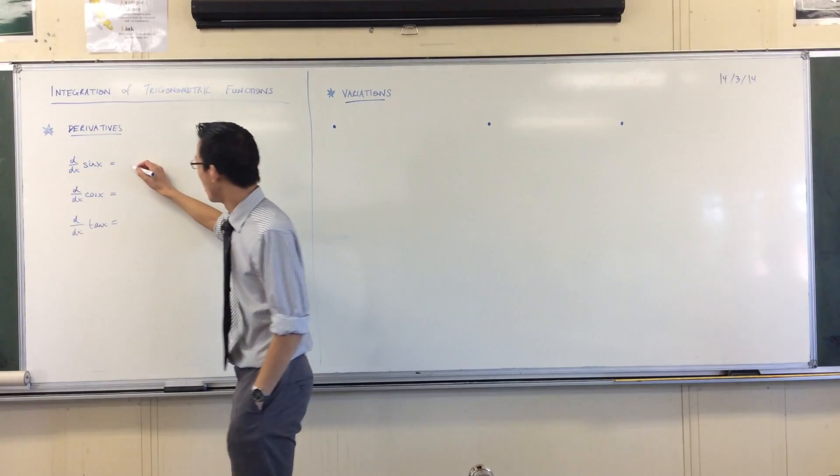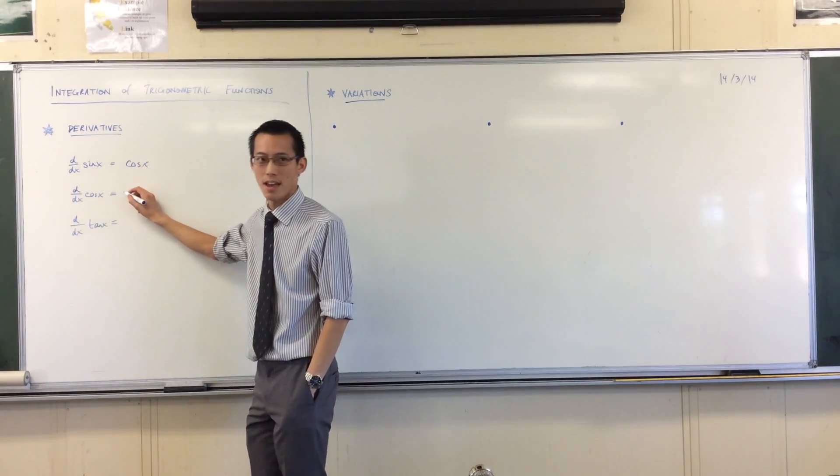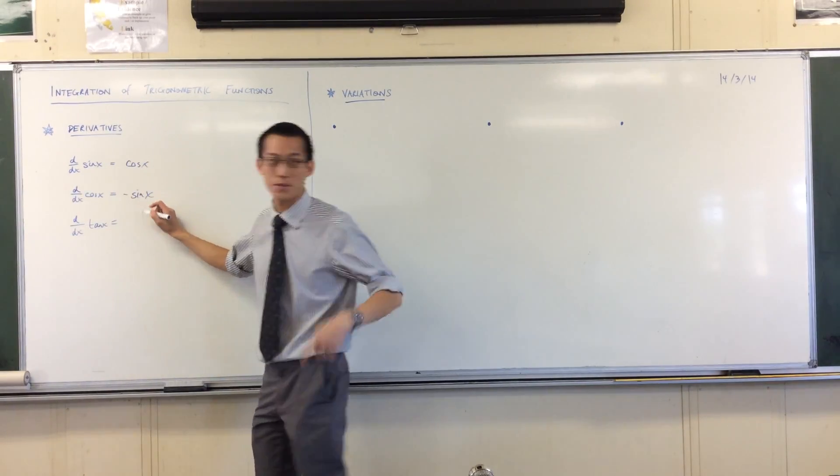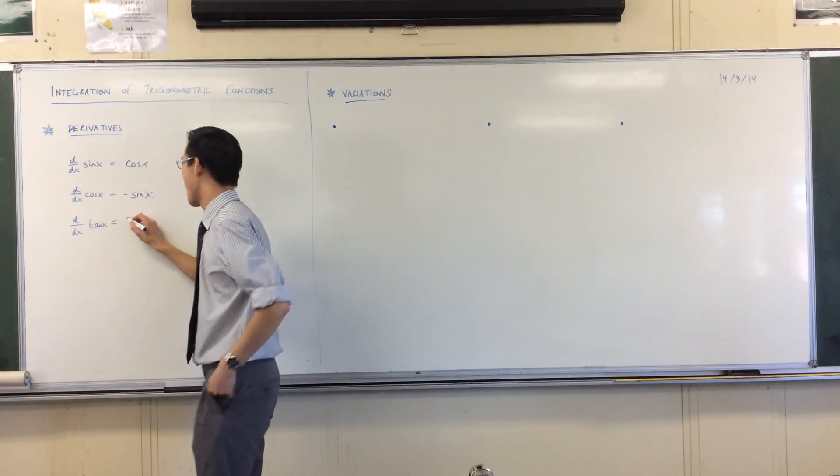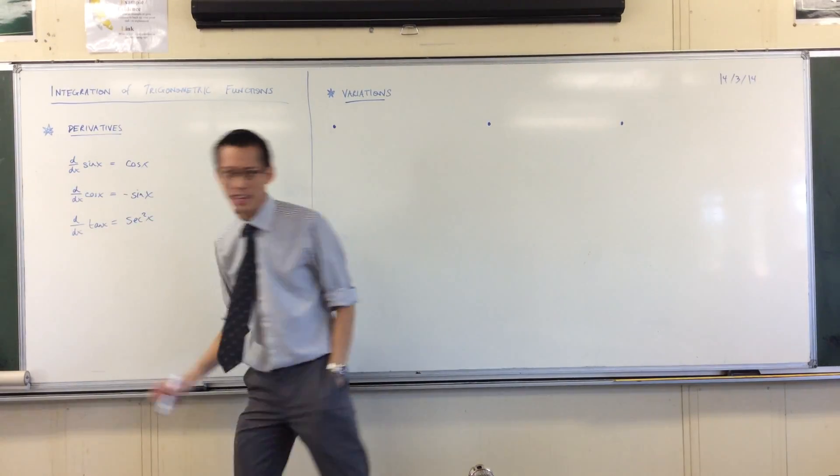The derivative of sin is? Cos. The derivative of cos is? Negative sin. The derivative of tan is? Sec squared. Okay, excellent.